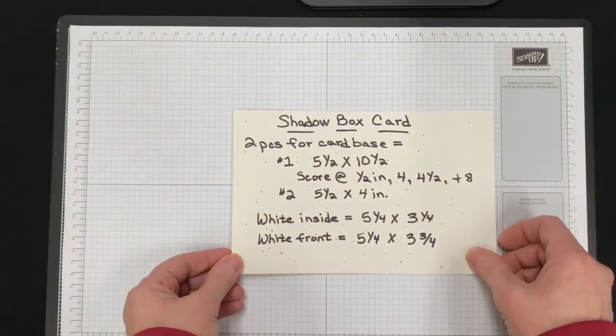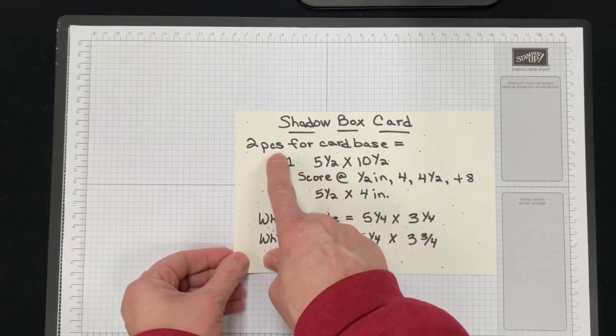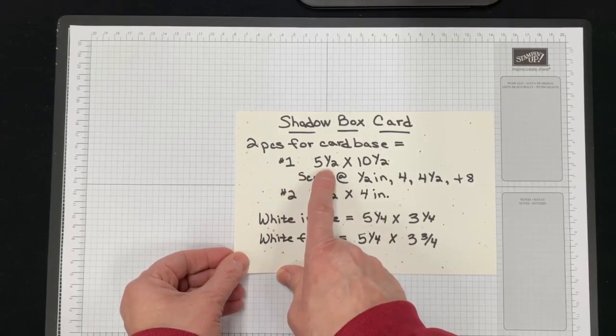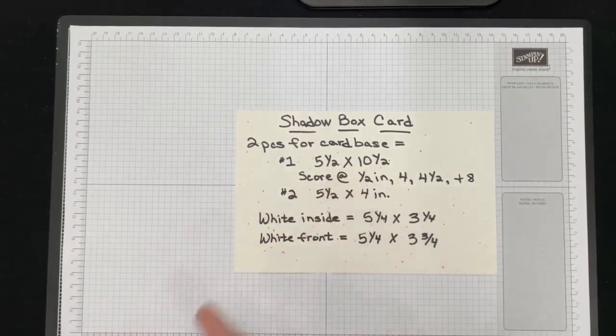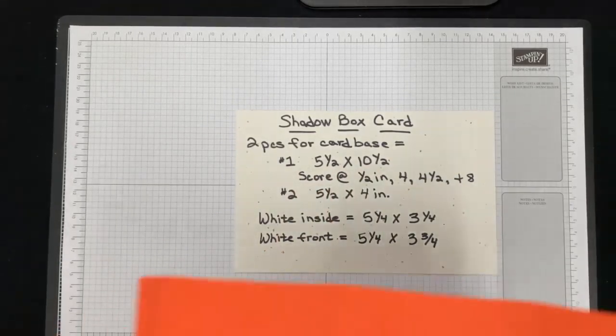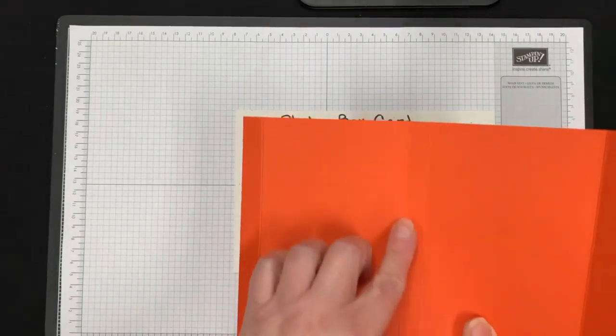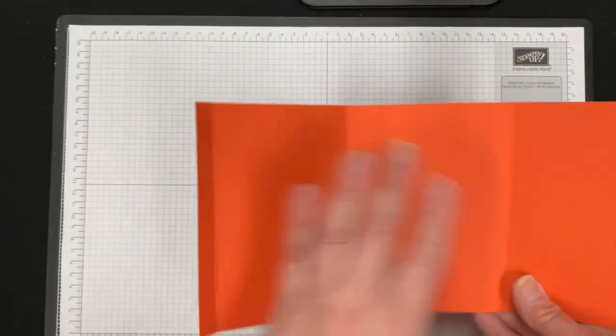Okay, so I'll tell you about these scoring dimensions. I wrote up a little card so if you want to take a picture of this or whatever. Shadow box card - the card base is actually two separate pieces. You're going to have one piece that's the folding, the scoring part, and it's five and a half by ten and a half. You're going to score at one half inch and four inches and four and a half and eight. So you actually have one, two, three, four score lines.